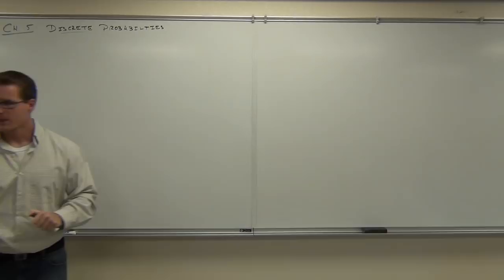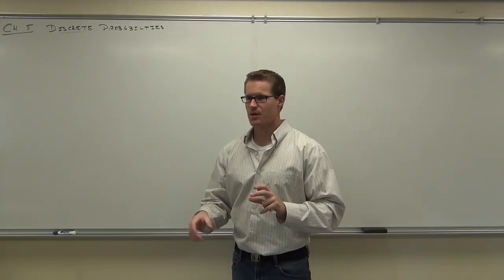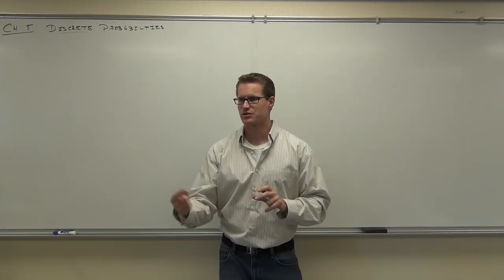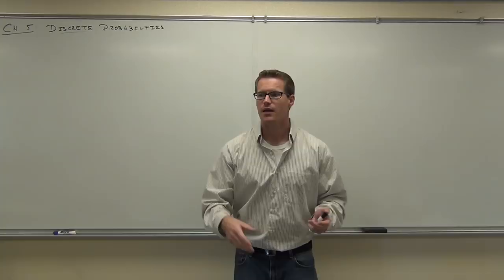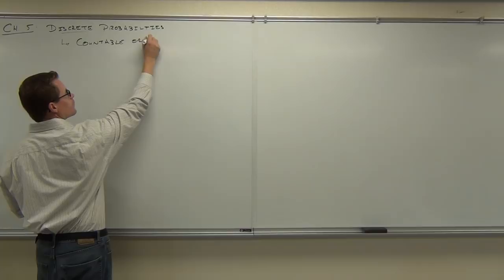Okay, so chapter 5 — we're still talking about probabilities, but specifically discrete probabilities. Do you remember what discrete versus continuous actually meant? The number of people in this classroom would be considered discrete because it's countable or finite. That's what discrete means: countable or finite.